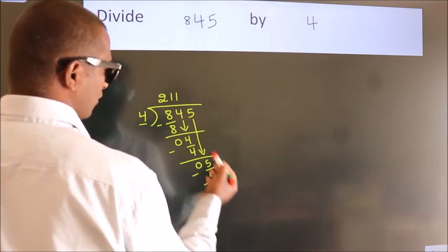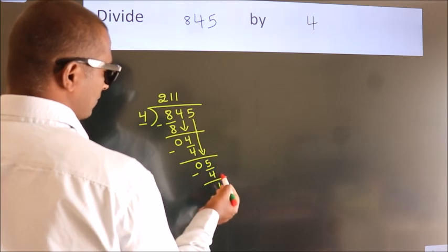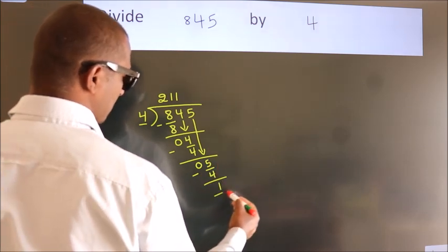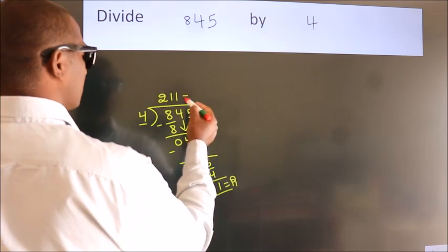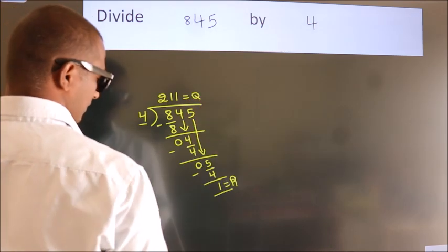After this, no more numbers to bring it down. So we stop here. This is our remainder. This is our quotient. Bye-bye.